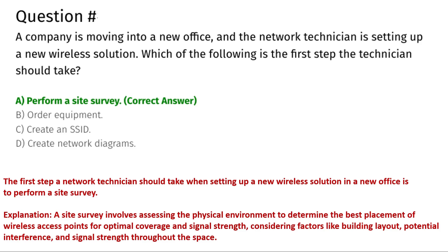The first step a network technician should take when setting up a new wireless solution in a new office is to perform a site survey. A site survey involves assessing the physical environment to determine the best placement of wireless access points for optimal coverage and signal strength, considering factors like building layout, potential interference, and signal strength throughout the space. That's why the correct answer is A, perform a site survey.